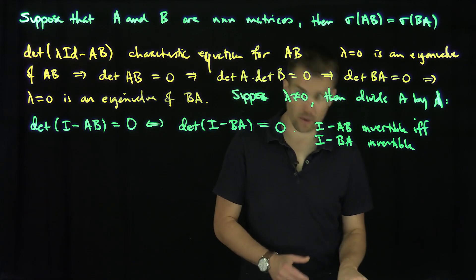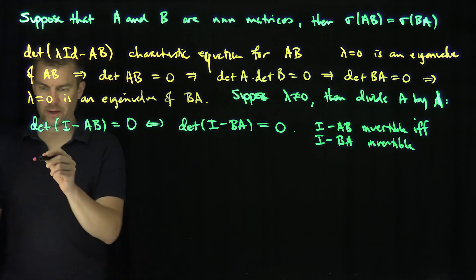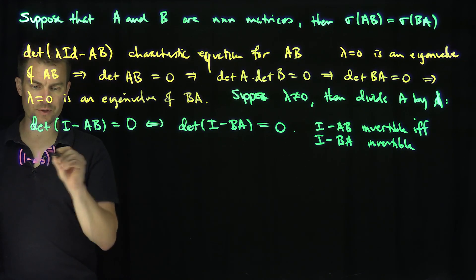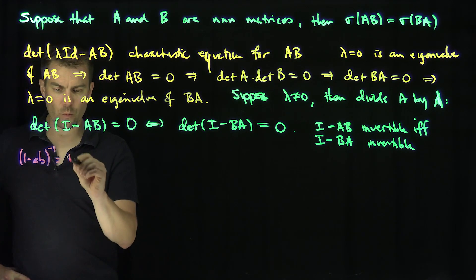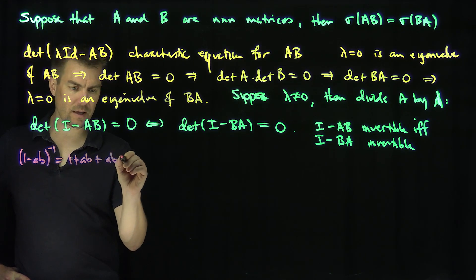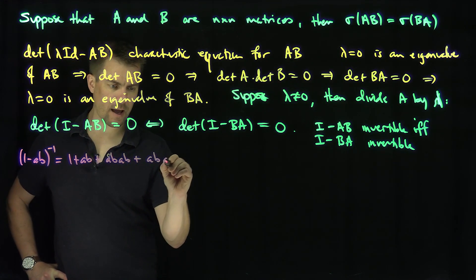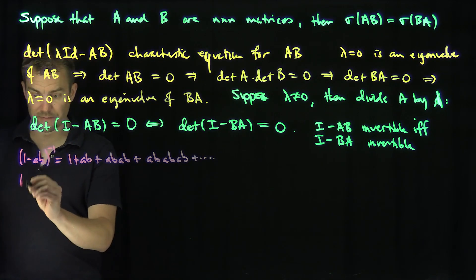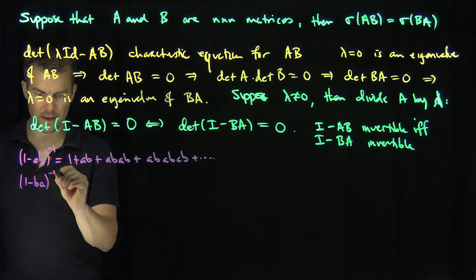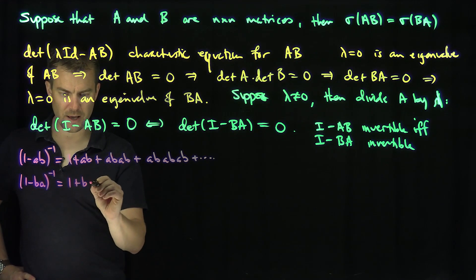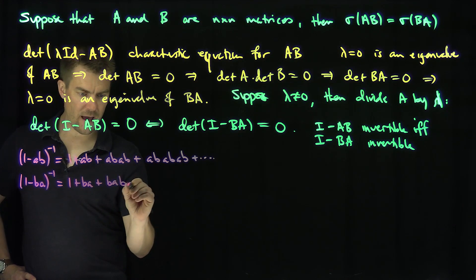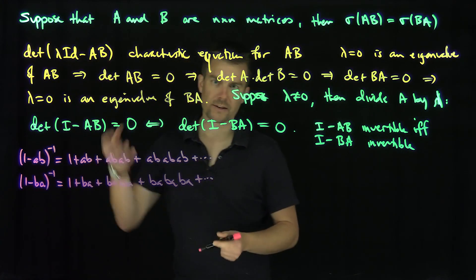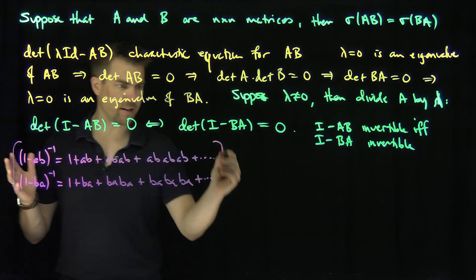Here's a common trick that occurs a lot in linear algebra. If we just look at numbers and consider one minus AB to the power of negative one, this would be the geometric series: one plus AB plus (AB)^2 plus (AB)^3, and so on. Similarly, one minus BA inverse would be one plus BA plus (BA)^2 plus (BA)^3, and so on — of course, assuming the norms of A and B are less than one. This is just our motivation and thought process.